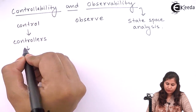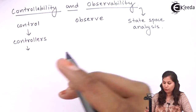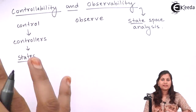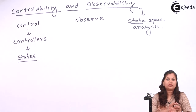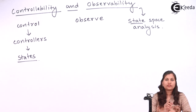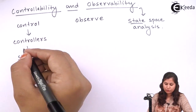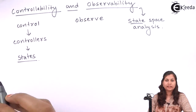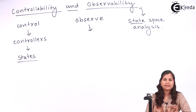These controllers should have control over the system, meaning they should be able to control the states of the system. Controlling a system means that an engineer should be able to change the inputs to the system, and through changes in the inputs, control the states of the system. Observability means that the engineer can observe all the states of the system.